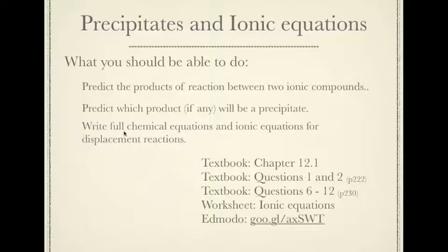You need to be able to write full chemical equations and ionic equations for displacement reactions or for precipitate reactions. So that means you need to balance chemical equations. You need to write the full one where you're showing all the ions and you should show the ionic equation where you're only showing the ones that are important, removing the spectator ions from them.